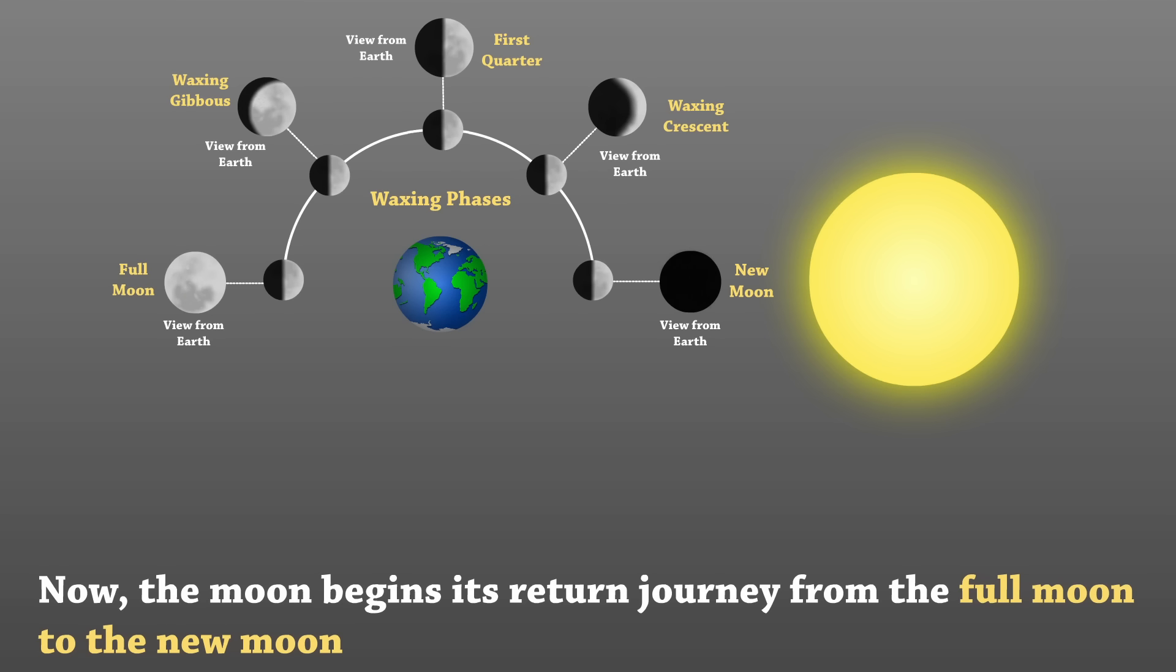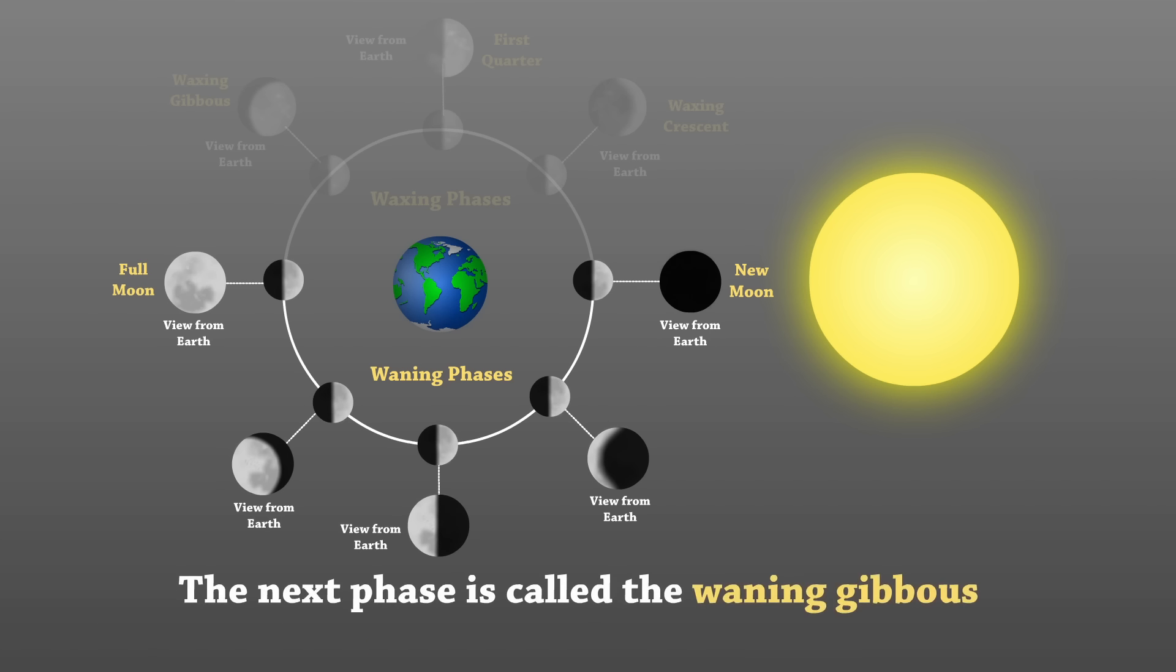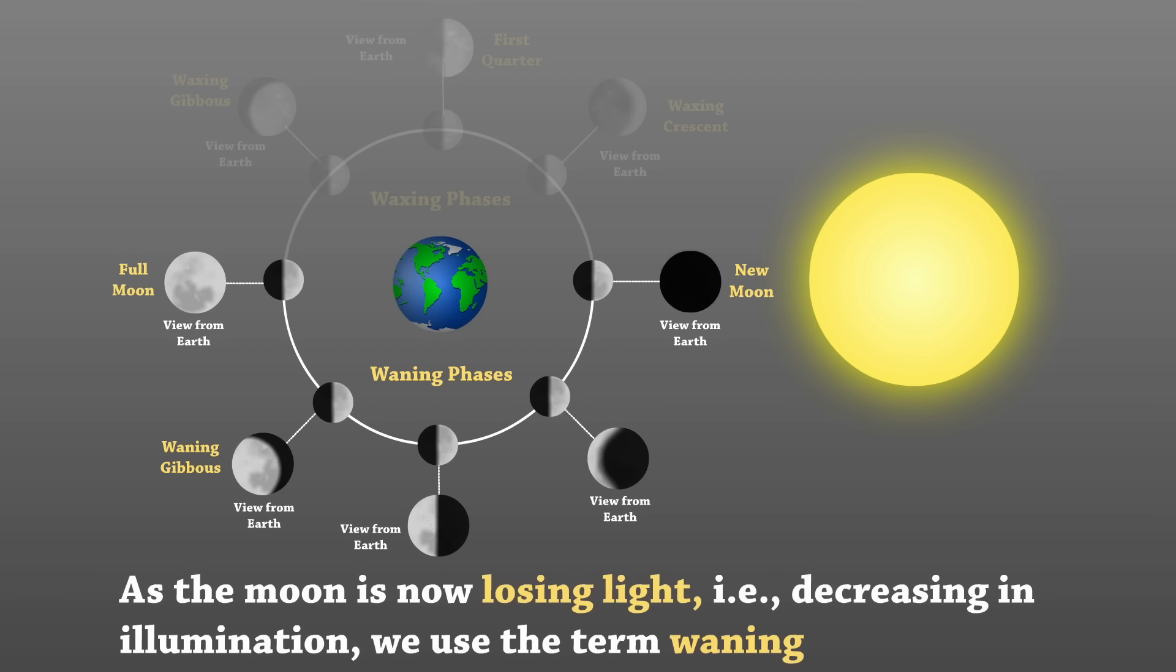Now, the moon begins its return journey from the full moon to the new moon. The next phase is called the waning gibbous. As the moon is now losing light, that is, decreasing in illumination, we use the term waning.